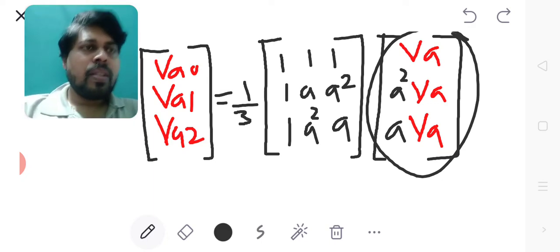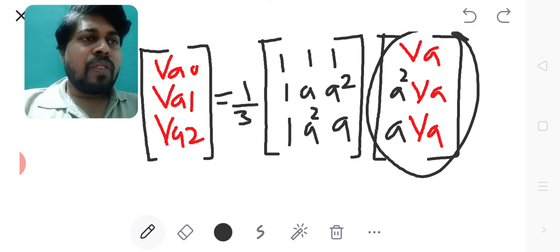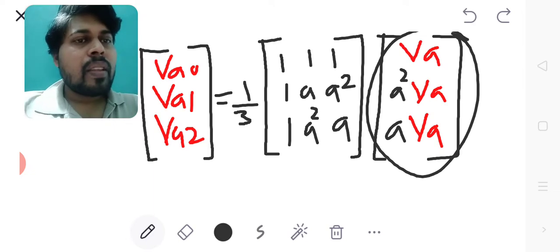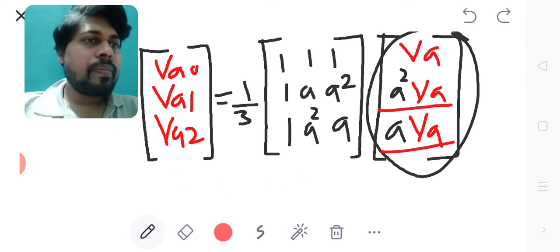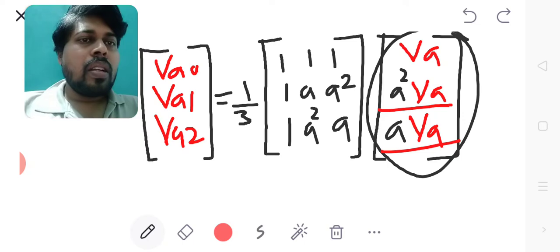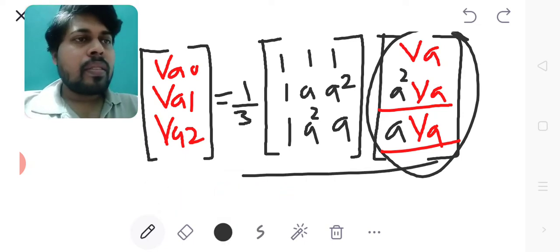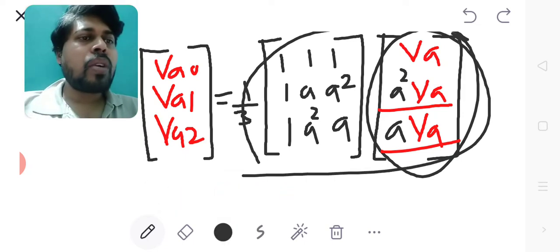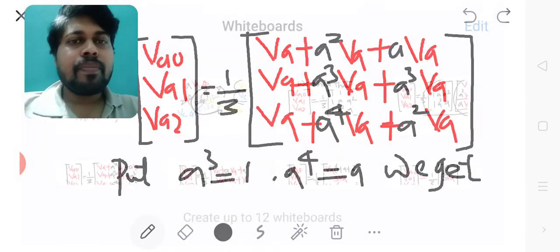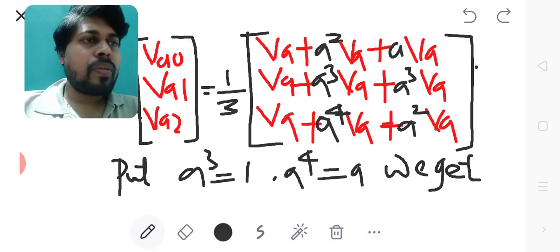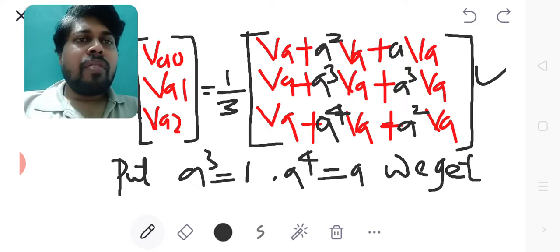If I substitute the expression for VB and VC in terms of VA and multiply the RHS part together, I will get this expression. VA0 VA1 VA2 equals 1 by 3 into VA plus A square VA plus A VA. Second row is VA plus A cube VA plus A cube VA. Third row is VA plus A raised to 4 VA plus A square VA.